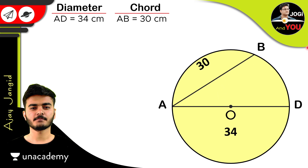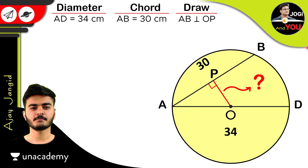So what we do is draw a perpendicular from center O to chord AB. We call the foot of this perpendicular P, so OP is perpendicular to AB. The distance we need to find is OP.